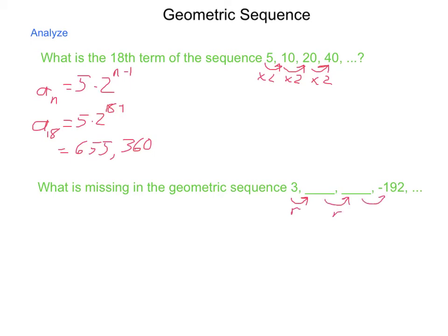All together we have three r's, so r cubed. And this is going to be equal to the change that occurred during this time. So we're going to negative 192 divided by 3. And that should tell us what our rate is, or our common ratio. So r cubed equals negative 192 divided by 3 is 64. Take the cubed root of each side and we have r equals a negative 4.